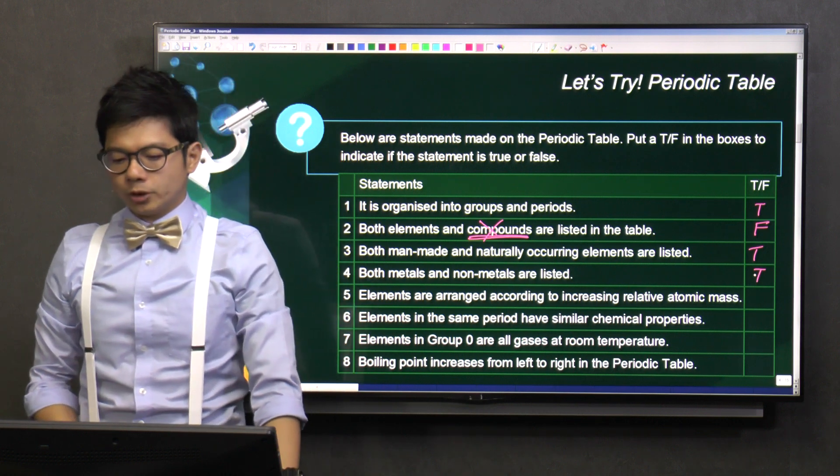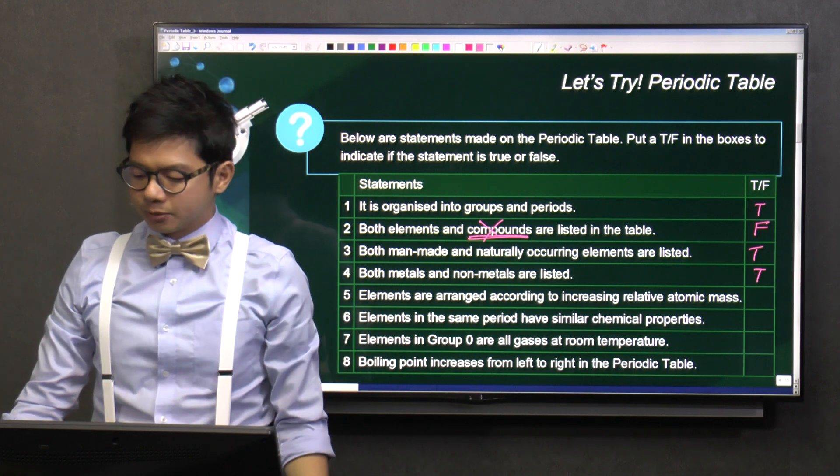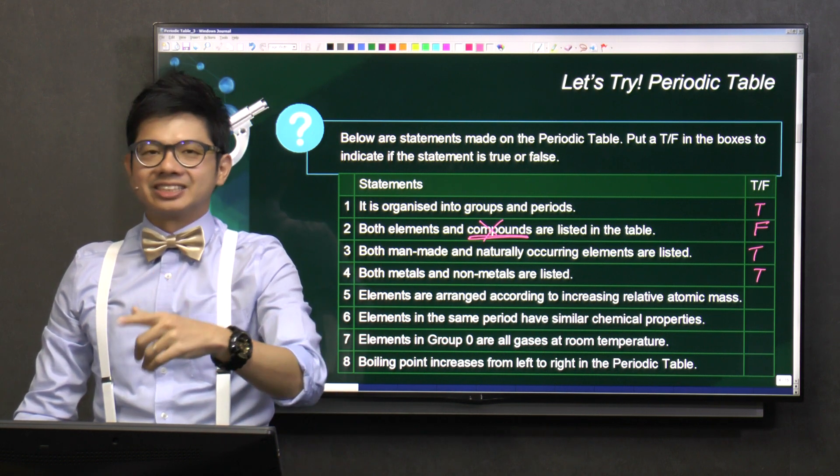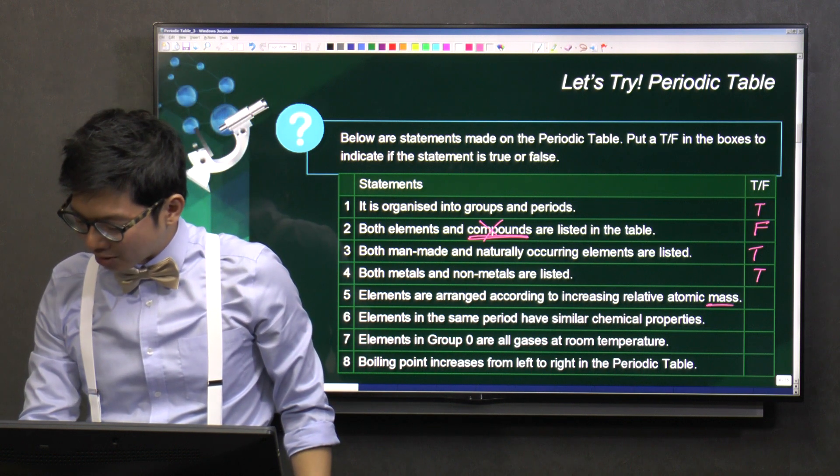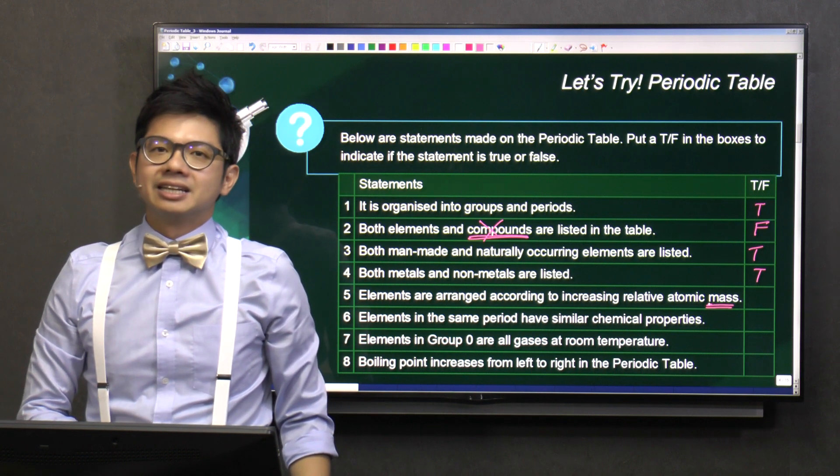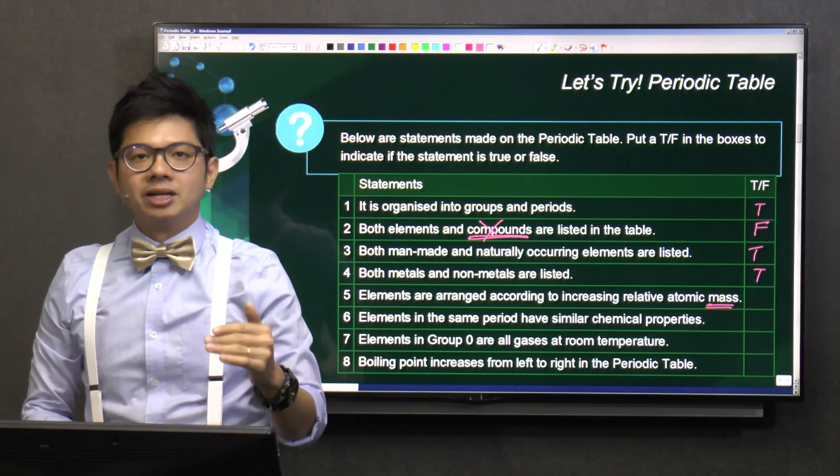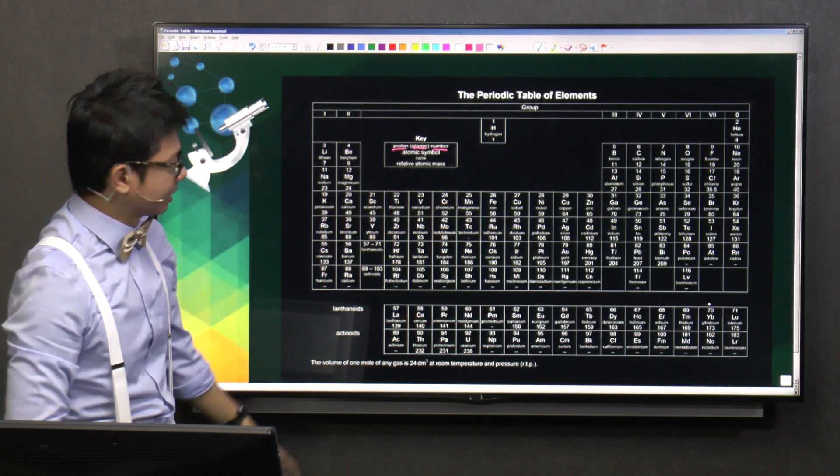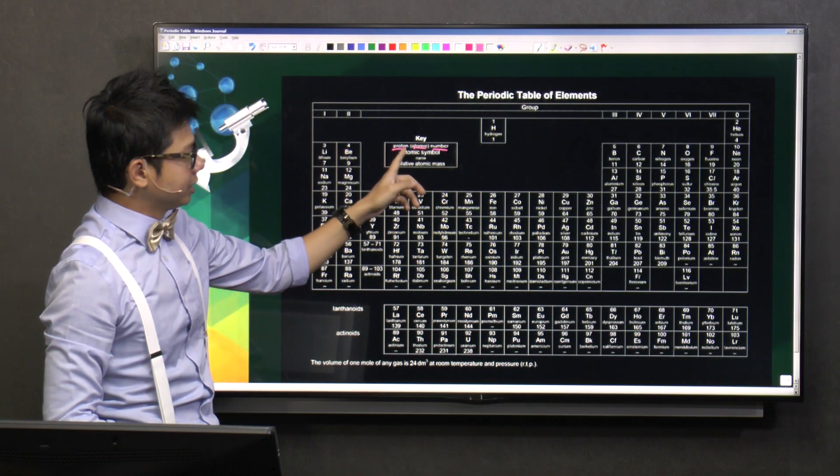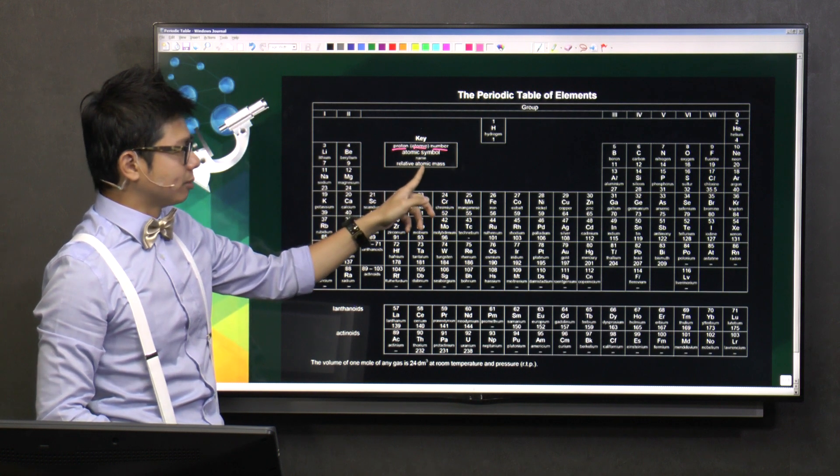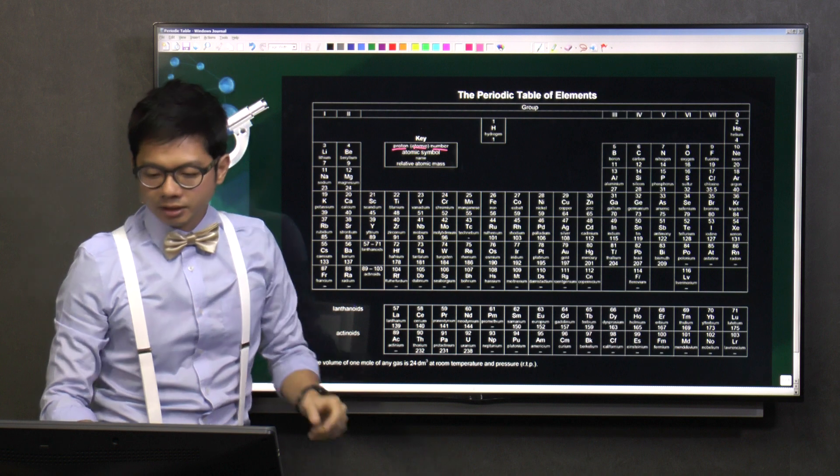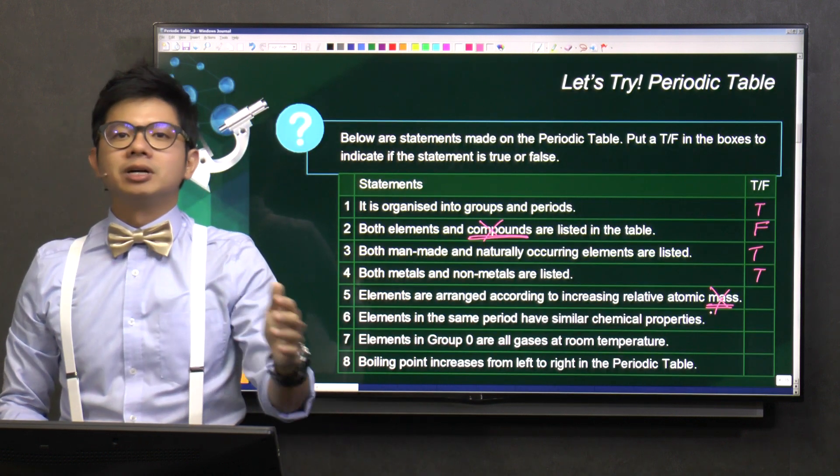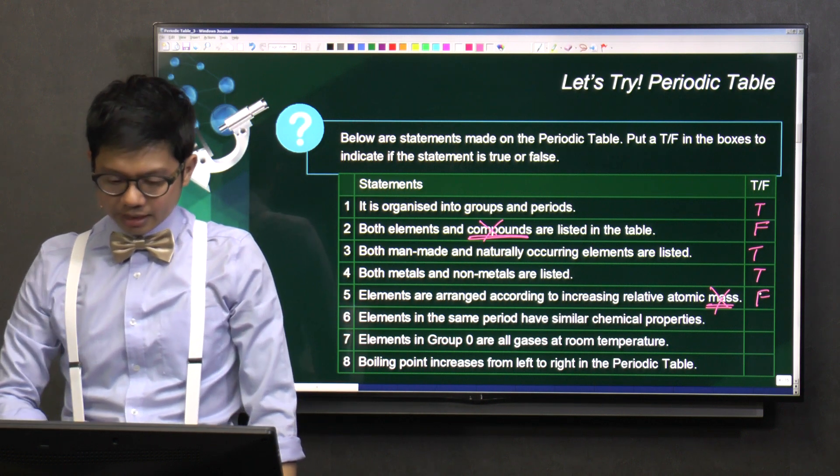Number five, elements are arranged according to increasing relative atomic mass. Some students might be tricked because they see the word atomic, then they'll just put it true. But is it atomic number or atomic mass? Atomic mass is the number below. Atomic number is the number on top. If you look at the periodic table, they are grouped according to the atomic number, which is the number on top, not the atomic mass, which is the number below. So, this part, there is a problem. It should be atomic number, not atomic mass.